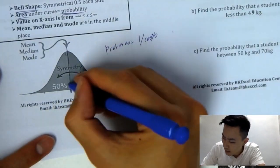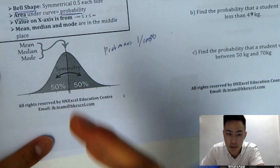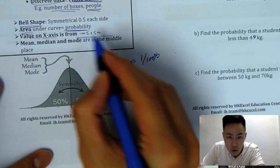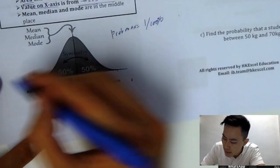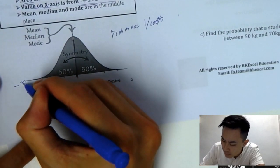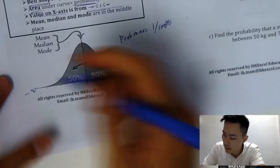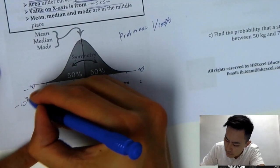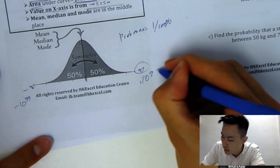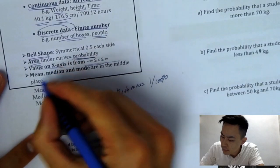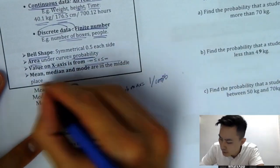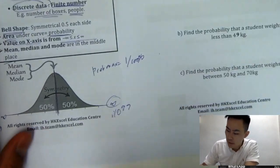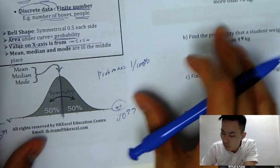Because the distribution is symmetrical, each side is 50%. The values on the x-axis go from negative infinity to infinity — all continuous data. On your calculator, because you cannot type infinity, we usually type negative 10 to the power 99 for negative infinity, and 10 to the power 99 for positive infinity. The mean, median, and mode are all in the middle line.